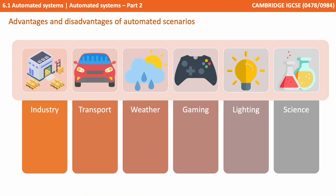There are many different scenarios where automated systems can be used. There are a number listed in your syllabus which you could be asked about in the exam, and these cover industry, transport, weather, gaming, lighting and science. So we're going to look at a decent example from each one.